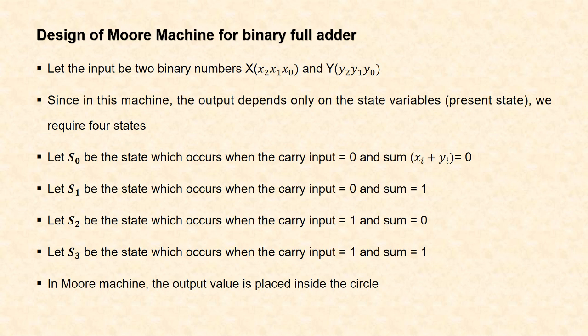Now let us design a Moore machine for a binary full adder. Here the inputs are two binary numbers X and Y. Since the output depends only on the present state, we require more states than the Mealy machine — here we require four states. S0 represents carry input = 0 and sum XI + YI = 0. S1 represents carry input = 0 and sum = 1. S2 represents carry input = 1 and sum = 0. S3 represents carry input = 1 and sum = 1. In a Moore machine, the output is placed inside the circle representing the state.